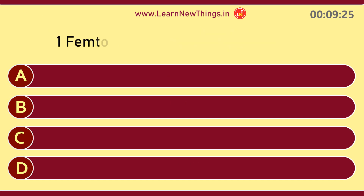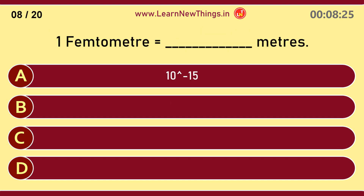1 femtometer is equal to 10 to the power of minus 15 meters.